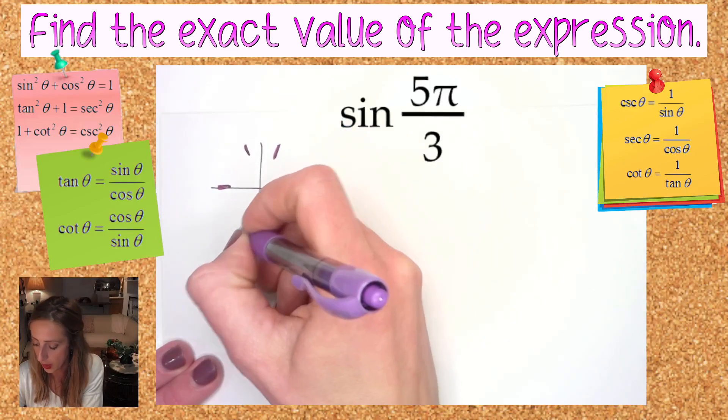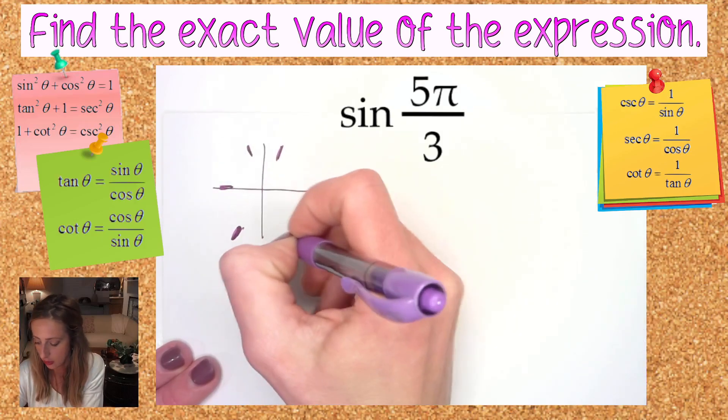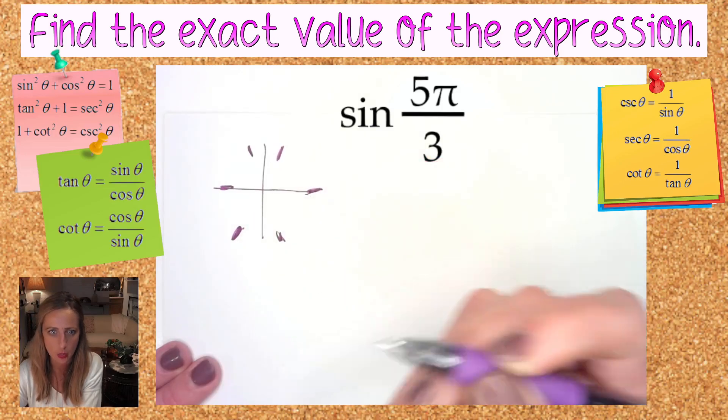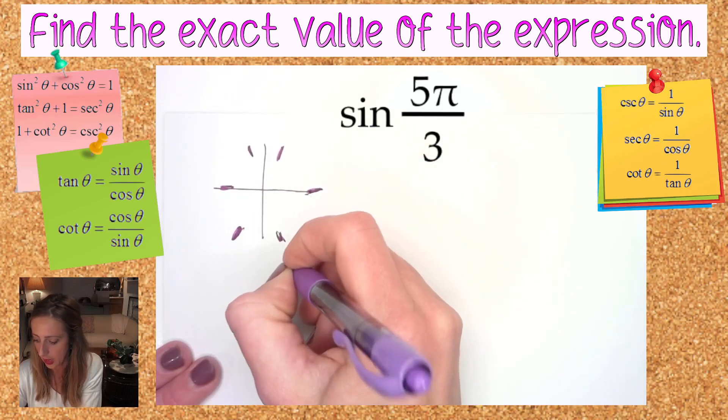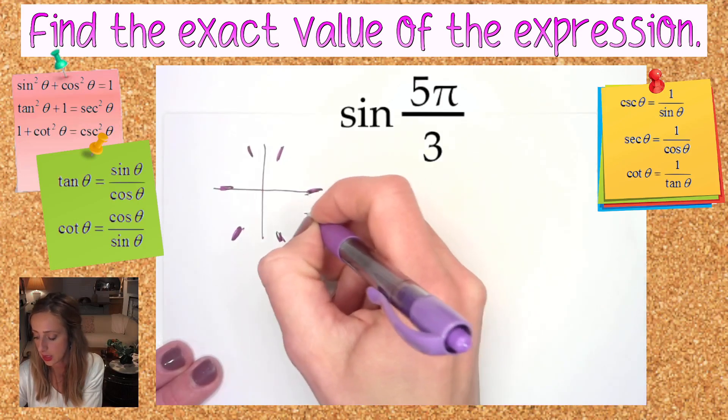3π over 3 is π, 4π over 3 is more than 3π over 3 so it's beyond π, 5π over 3, and then 6π over 3 would be 2π. So I know I'm doing pretty well right now. 5π over 3 is going to be right over here, this is in quadrant IV.